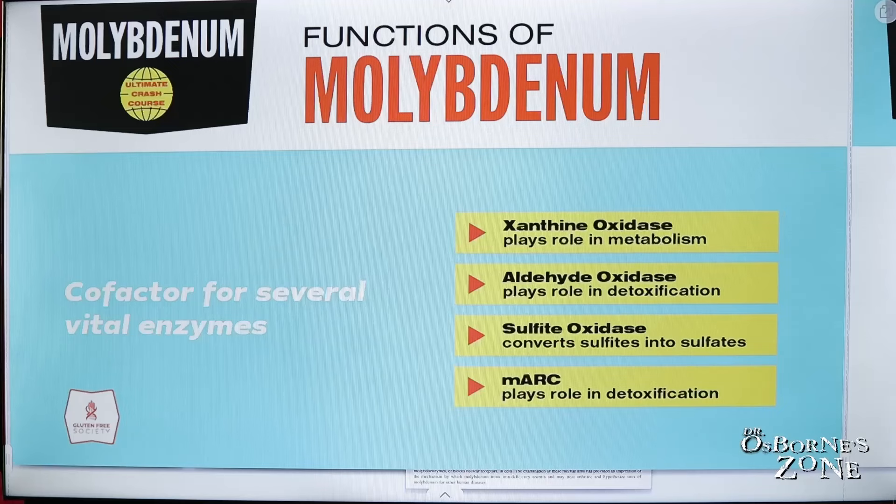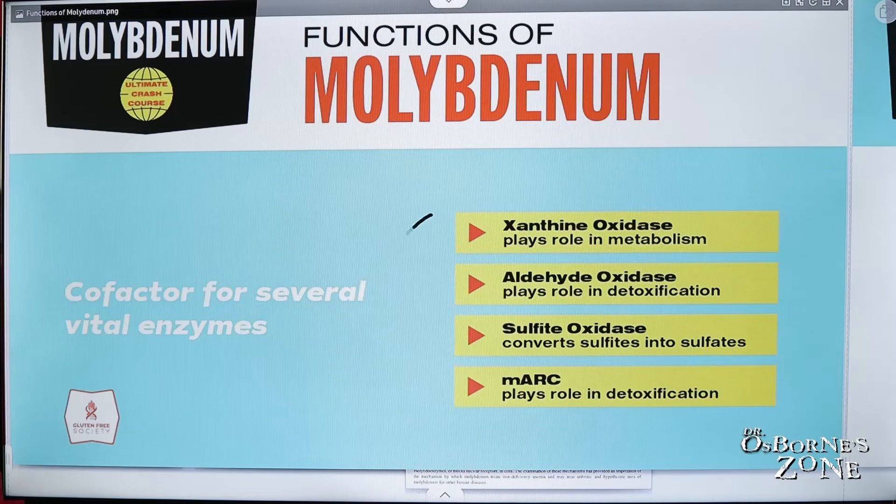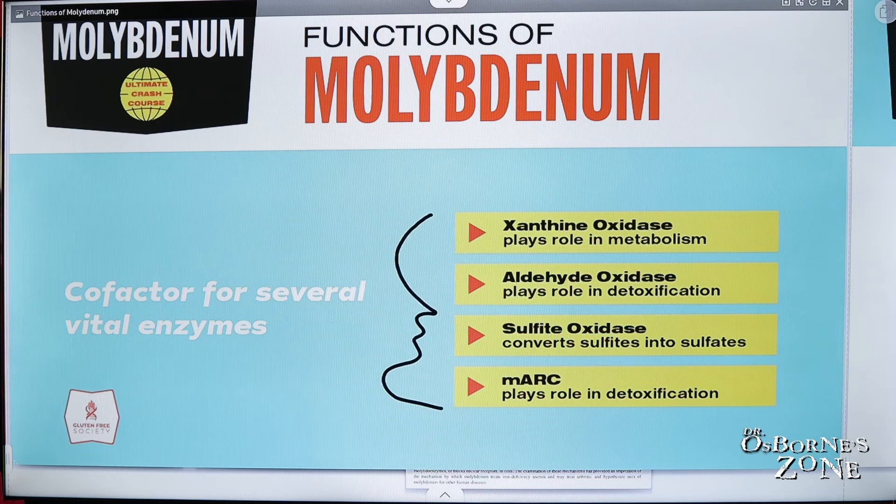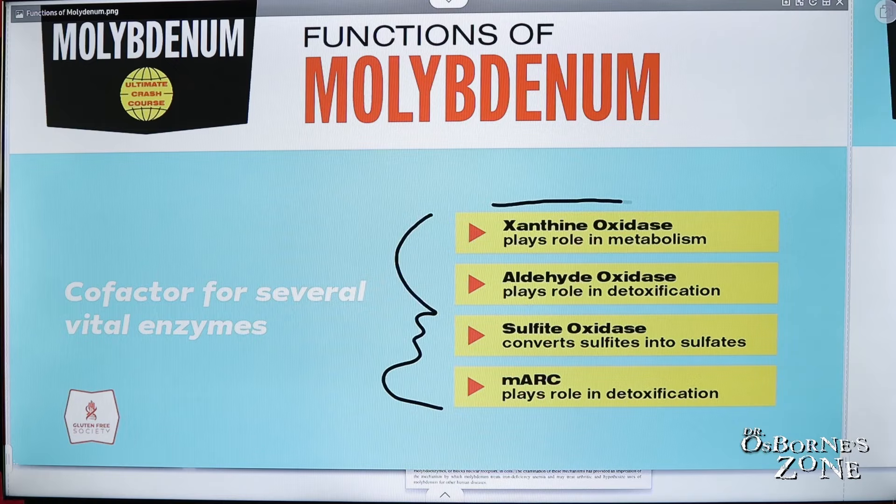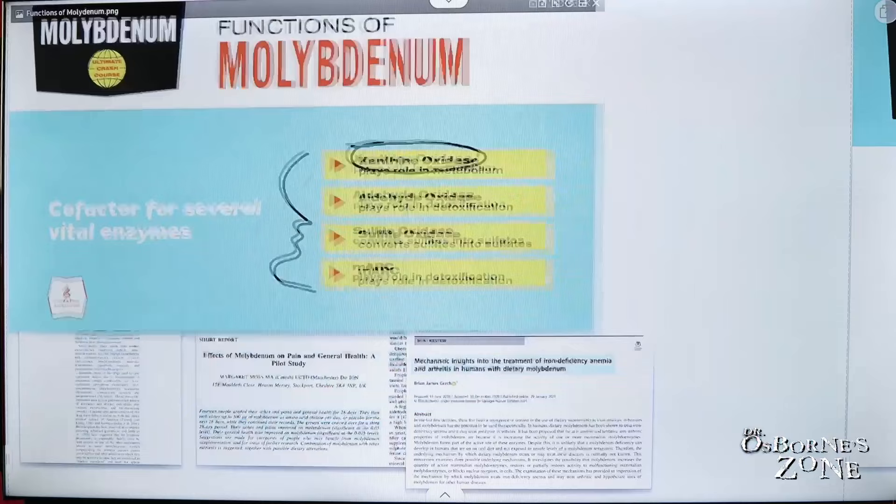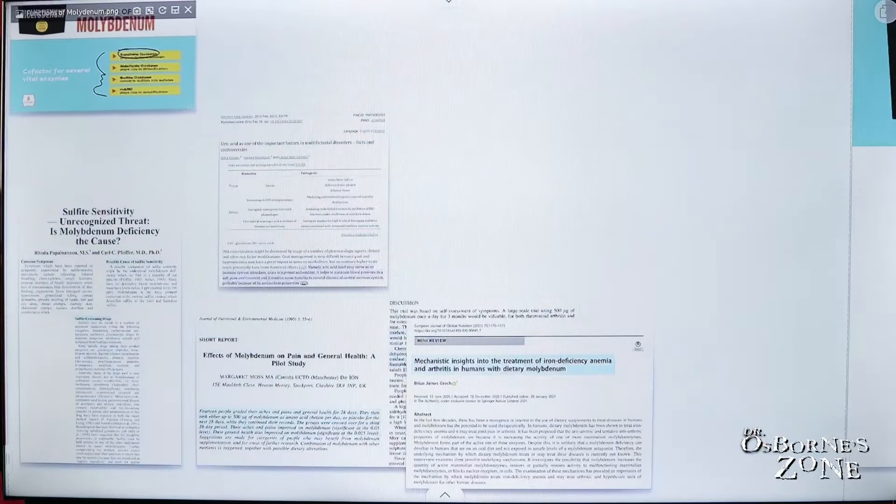So we come back to this diagram here. We've seen this before. I told you there were four enzyme systems that molybdenum is critical in playing a role for, and one of them, this xanthine oxidase system, which is how we metabolize chemicals down into uric acid. So I want to talk a little bit about some of this.